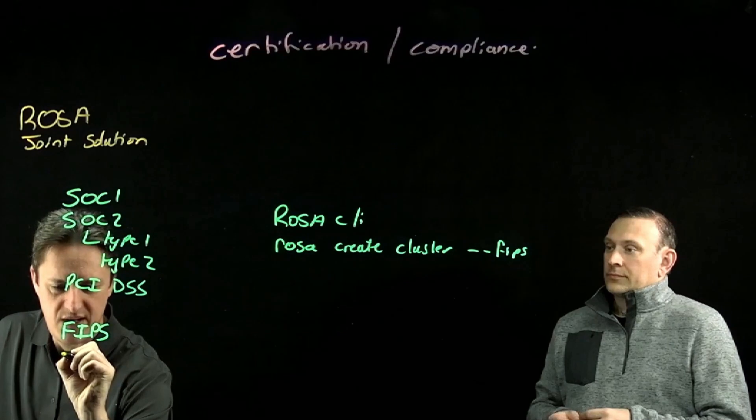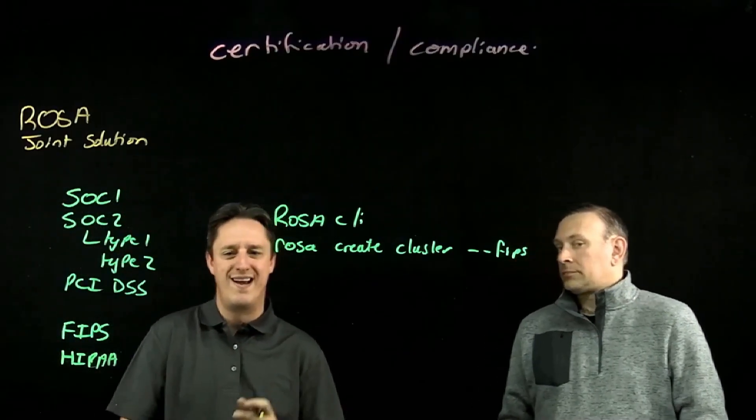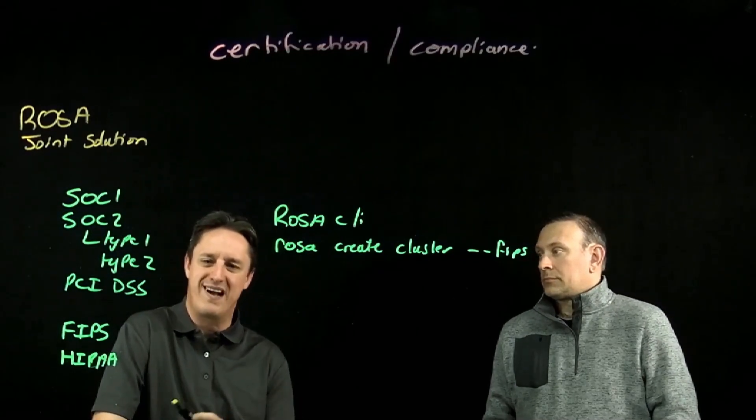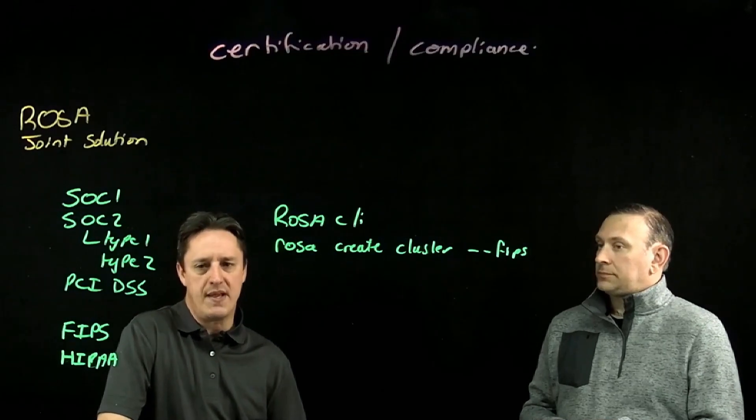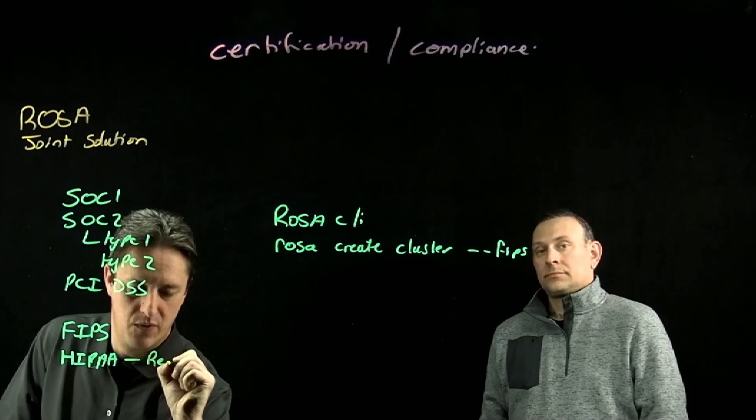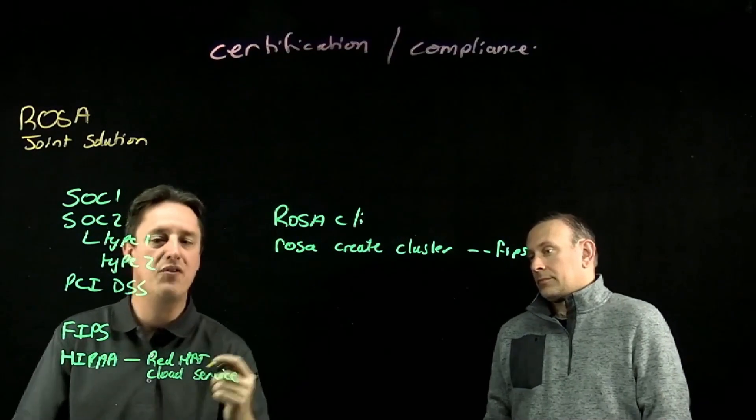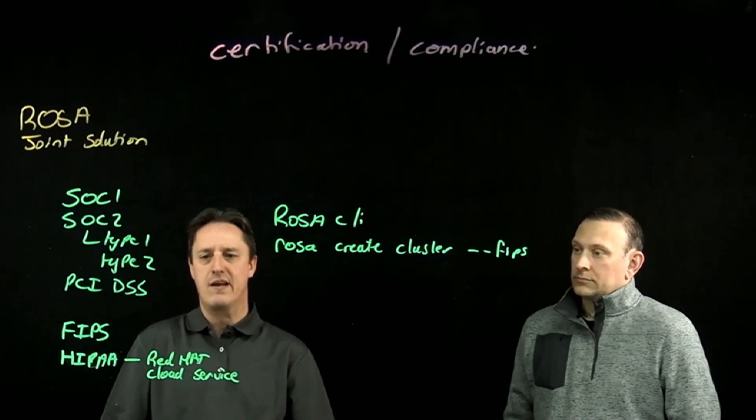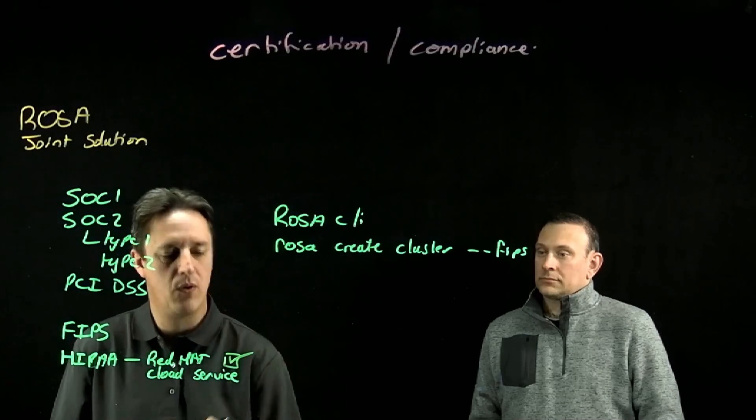Right. So, for HIPAA, we haven't certified ROSA for HIPAA, but instead what Red Hat has done, because this is a joint solution, because there is an SRE team managing this, the customer cannot go through their HIPAA journey on their own because the customer has no fingers in the pie of the Red Hat SRE team or their change control process. So, what Red Hat has done is they have gone and taken all of their back-end cloud services. These are all of the Red Hat cloud services. So, this is how the SRE teams interact with the ROSA clusters. This is their change control process. This is their security, their escalation path. And they have taken everything that Red Hat is in control of, of this managed solution, and they've taken that through HIPAA certification. And these services are now HIPAA certified.